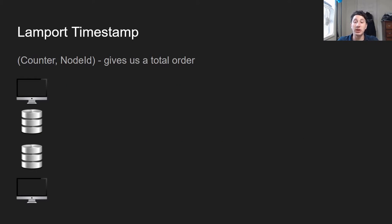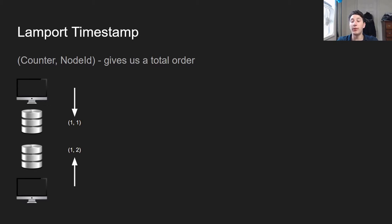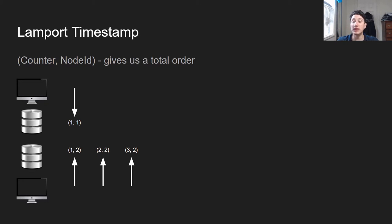Lamport timestamps are basically a tuple of two elements: a counter and a node ID. Using this counter-node ID combination, we can actually get a total ordering of the writes. Let's imagine the counter starts at one for every single client and database, and each database has a node ID. We start off with two writes: the top client writes to the first replica and the bottom client writes to the second replica — their counters both start at one. In subsequent operations, the bottom replica serves even more writes, so the counter increments by one each time, making those operations 2,2 and 3,2.